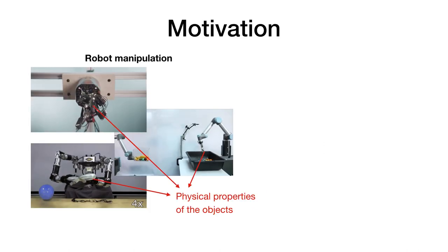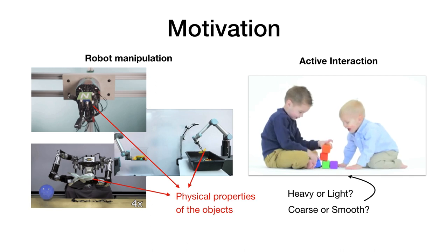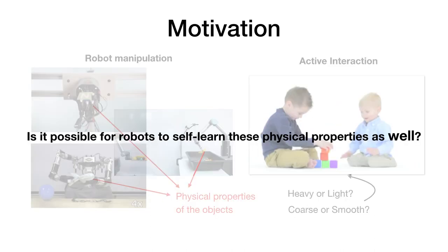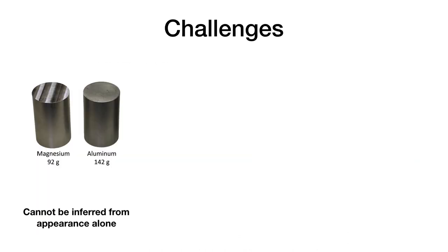Intelligent manipulation benefits from being able to distinguish between different object materials and understand their physical properties. We as humans gradually acquire this understanding by interacting with objects over time. Is it possible for robots to learn about these properties by themselves as well? Doing so is actually quite challenging.